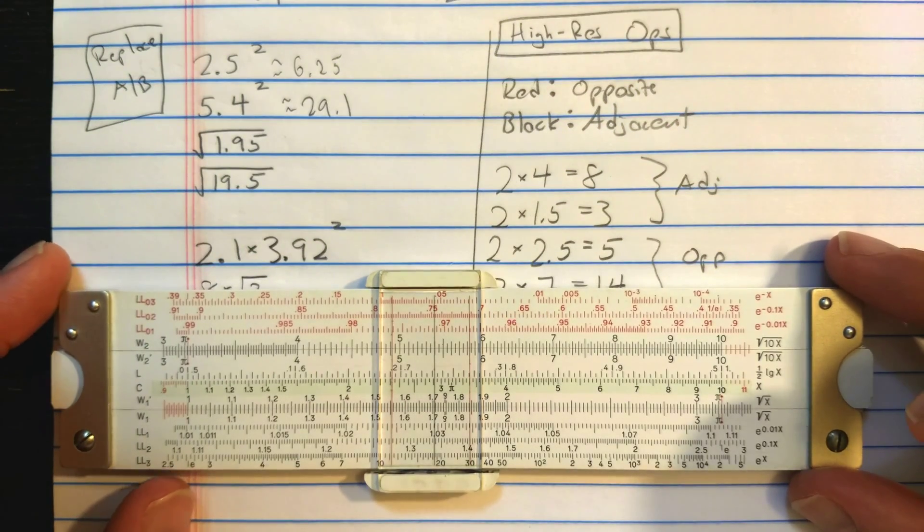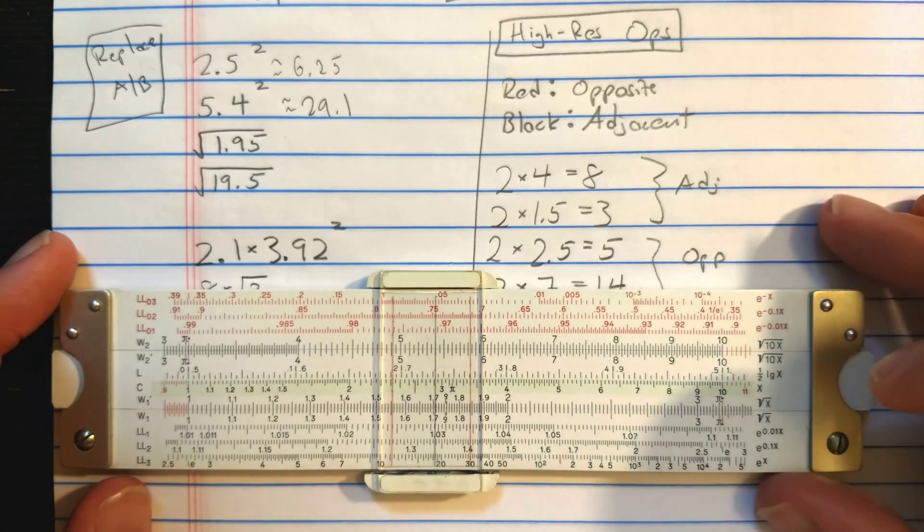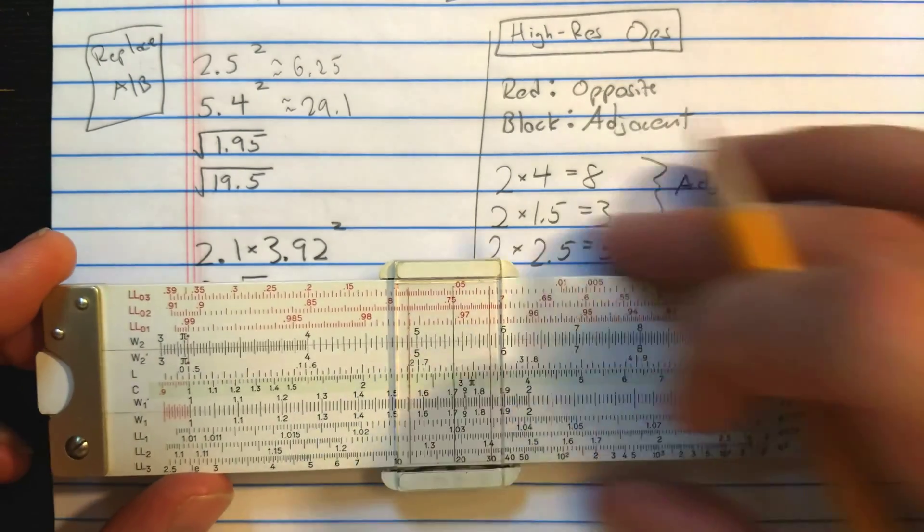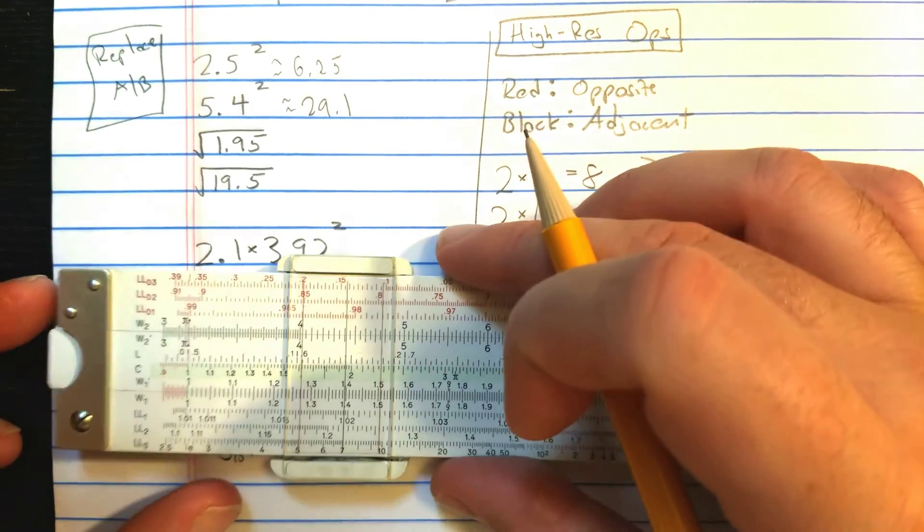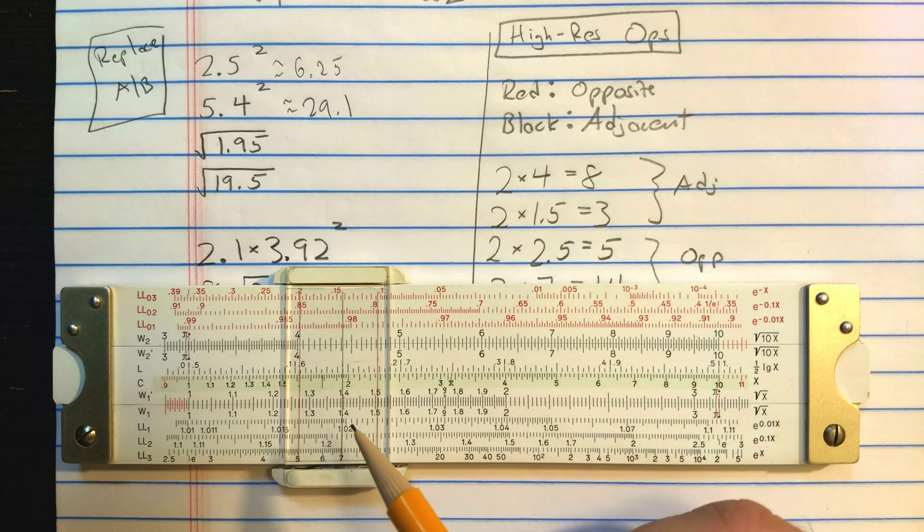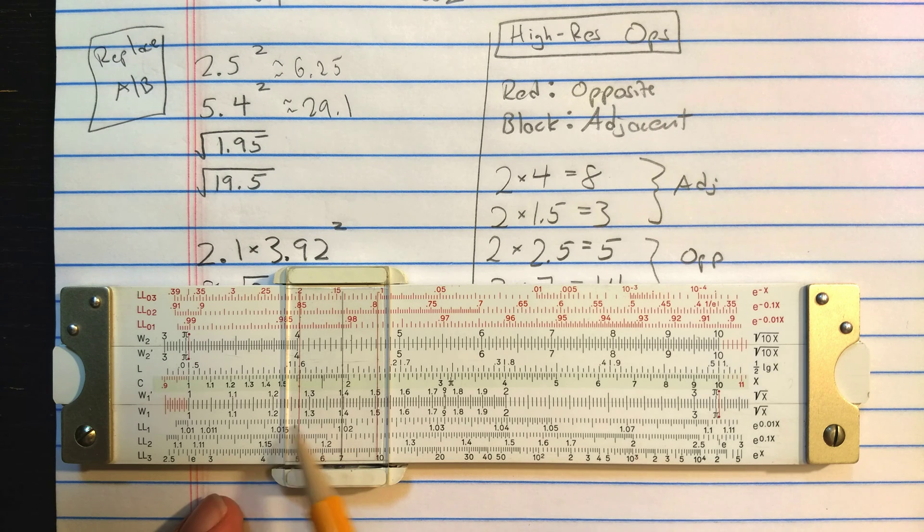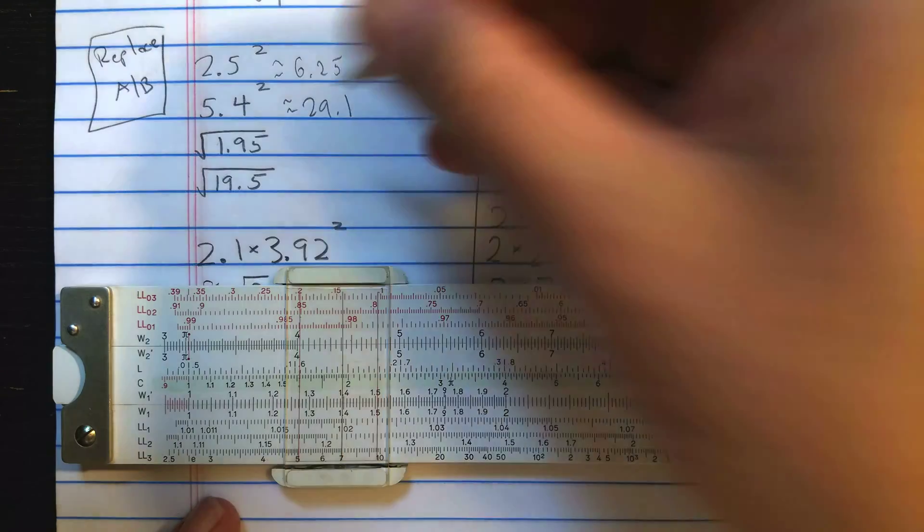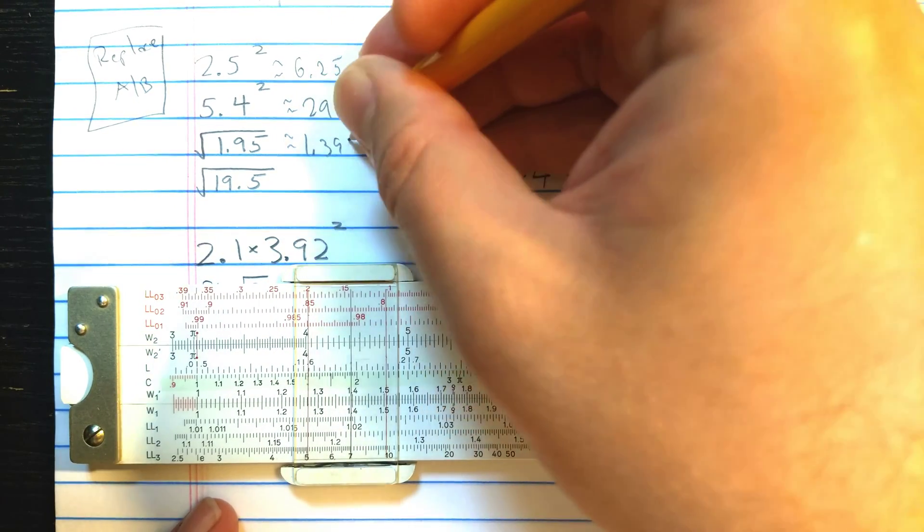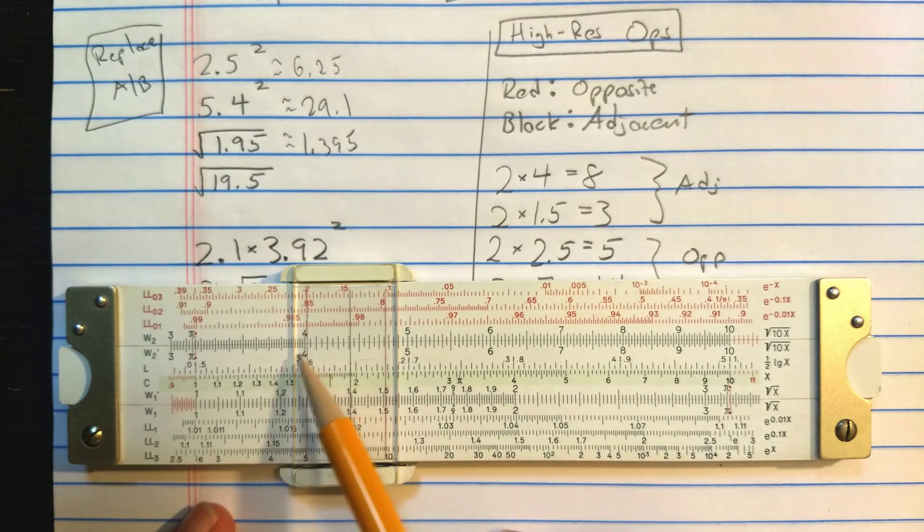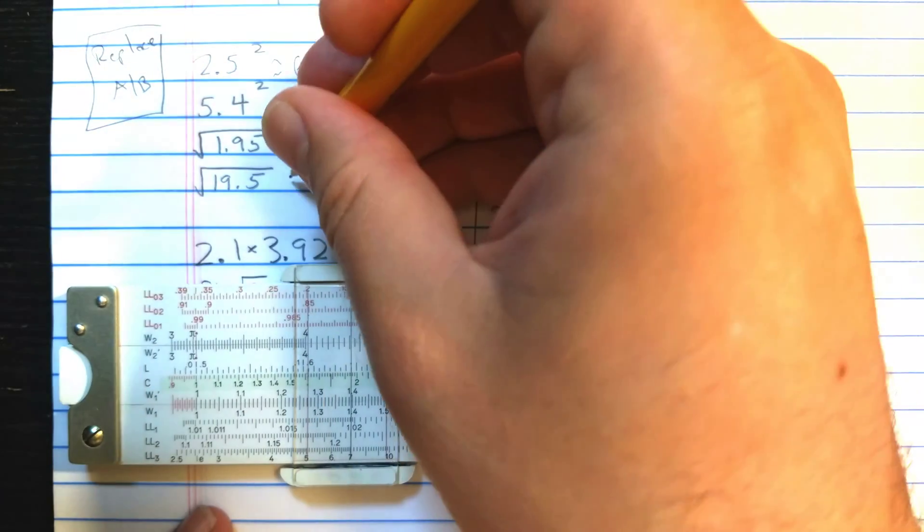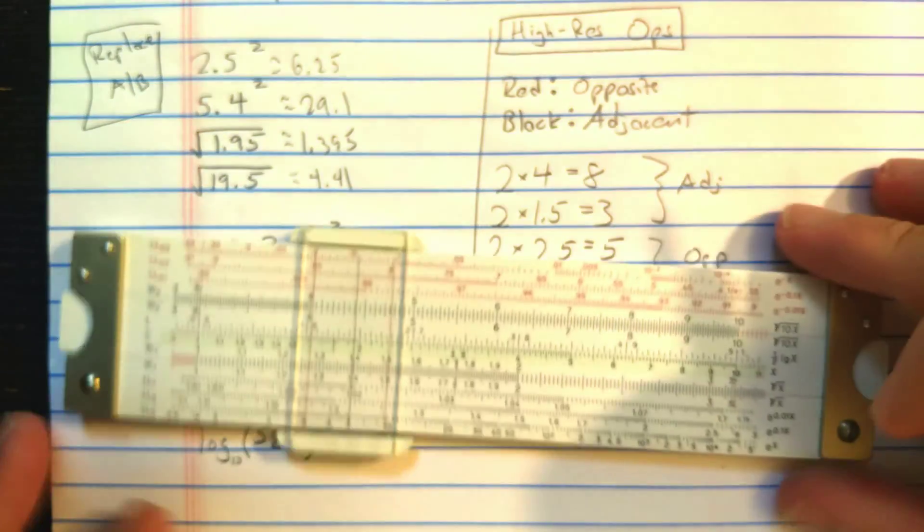To find a square root, you do this in reverse. So you find the number 1.95 on the C scale. Then you have to use the rule that you would use for A and B. Since 1.95, that's a one-digit number, I'm going to read the square root on W1. It looks like about 1.395. Whereas the square root of a two-digit number, 19.5, would be up here on W2. It looks like 441.